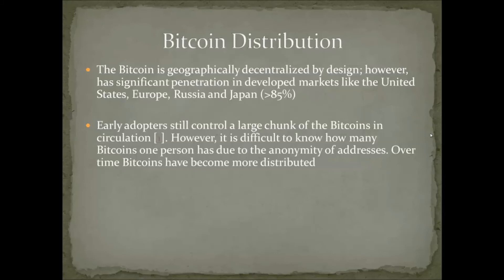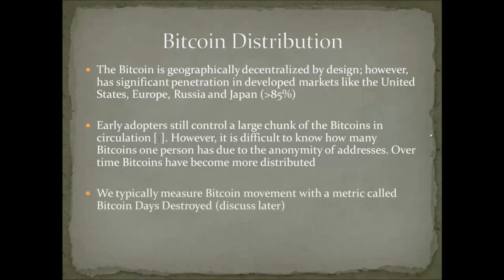This is very common with any asset. If you look at startups, the CEO, board of directors, and early people will probably have significant equity share. But after an initial public offering, the core group of early adopters will start selling off their holdings, and after 10 or 25 years, the largest shareholders tend to be mutual funds and other institutions — not the founders. This is to be expected with Bitcoin. We typically measure Bitcoin movement with a metric called Bitcoin Days Destroyed, which I'll reserve for a little bit later in the lecture.